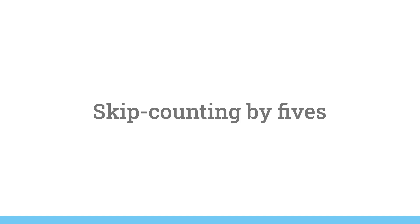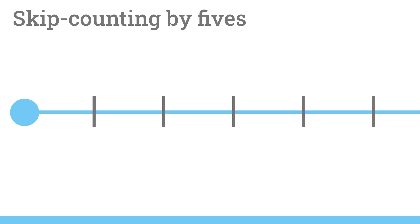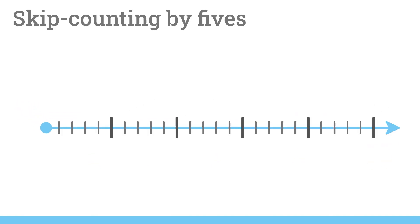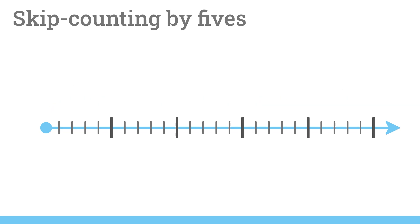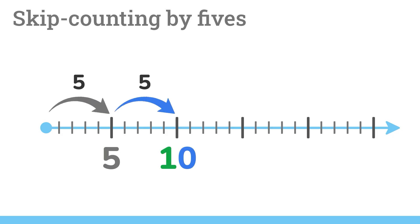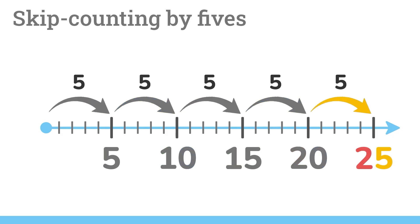First up, skip counting by fives. Instead of counting by ones, like 1, 2, 3, 4, 5, we skip ahead five at a time. It's like taking a small leap forward with each number. The pattern is 5, 10, 15, 20, 25, and it keeps going.